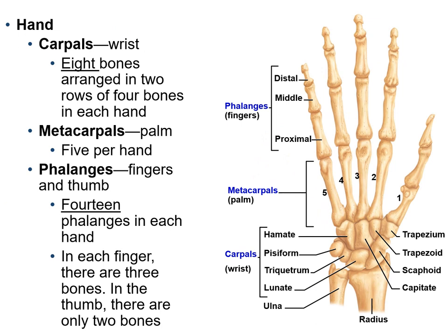The wrist is composed of eight short bones called carpals, arranged in two rows of four bones in each hand, and these bones have been labeled individually in the figure. The carpals articulate proximally with the radius and ulna and distally with five long bones called metacarpals. The metacarpals articulate distally with the fingers, which are formed from 14 long bones called phalanges. The second through fifth digits have three phalanges each — proximal, intermediate, and distal — while the thumb has only two: a proximal and a distal phalanx.